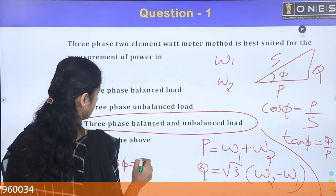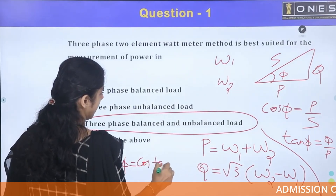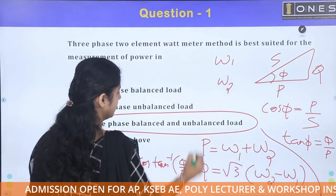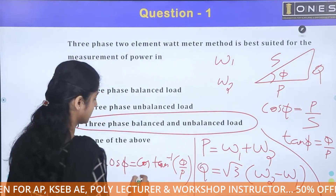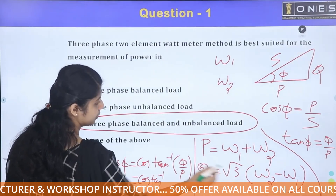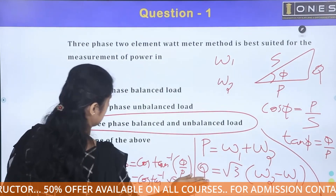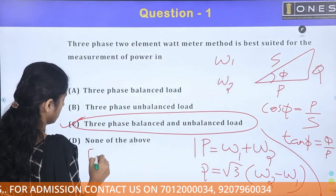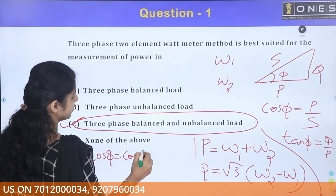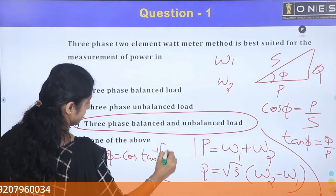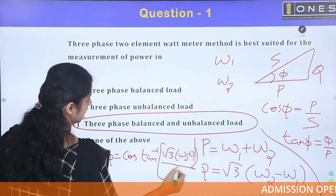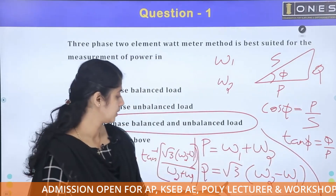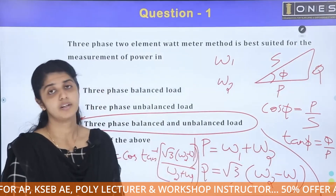Cos phi is equal to cosine of tan inverse of (Q/P). Substituting the values: Q is equal to root 3 (W2 minus W1) and P is equal to W1 plus W2. So cos phi equals cosine of tan inverse of root 3 (W2 minus W1) divided by (W1 plus W2).